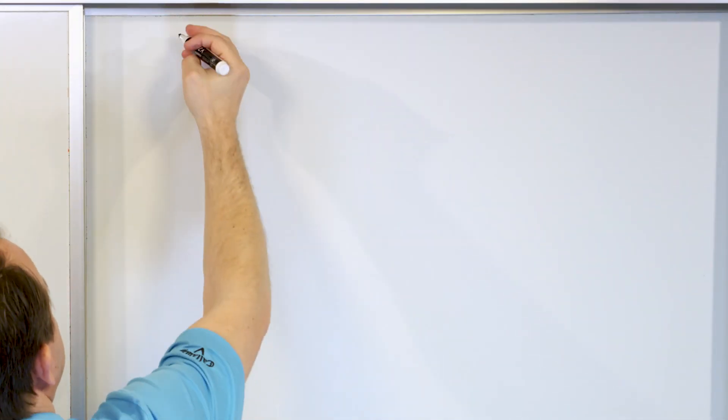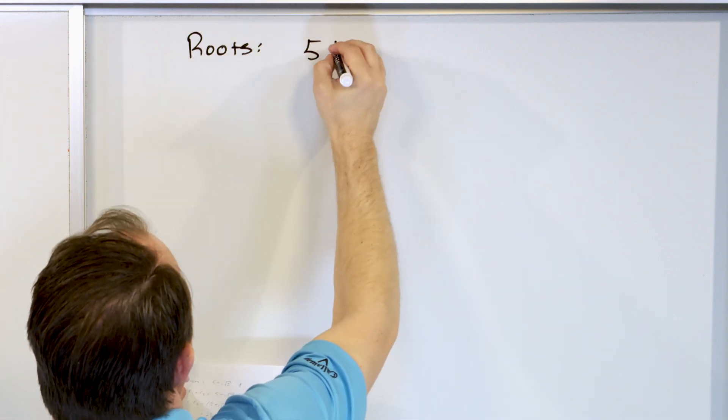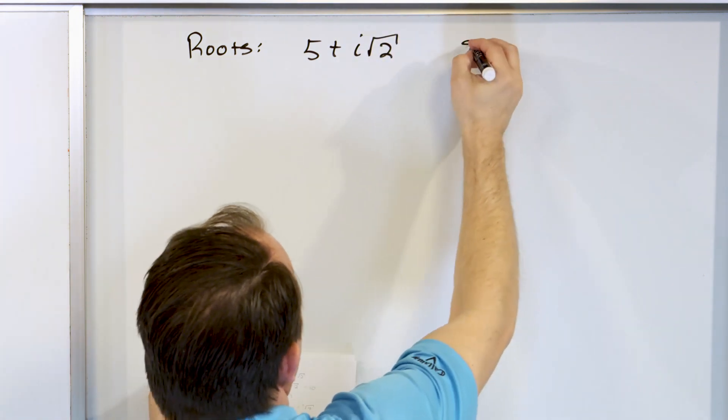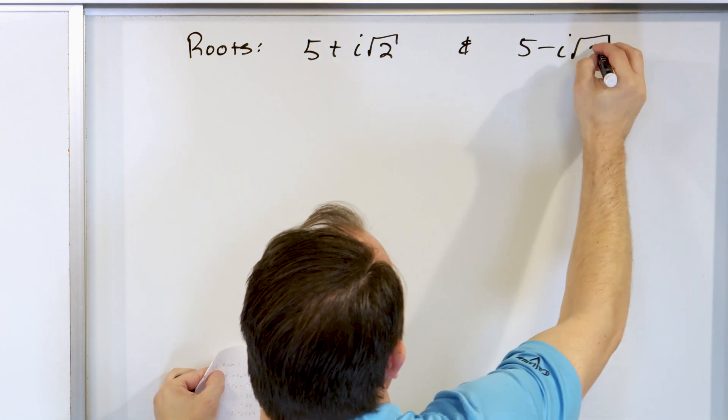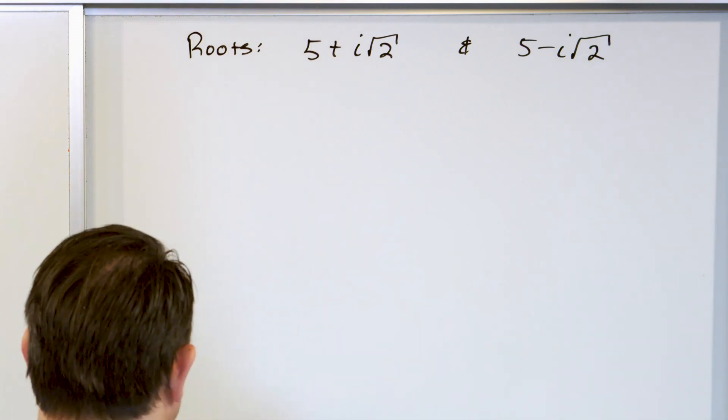This last problem also has complex roots, but with radicals thrown in. The two roots are 5 plus i times the square root of 2, and 5 minus i times the square root of 2. You can see they're conjugates of one another and each has a radical part, so we have to deal with that.